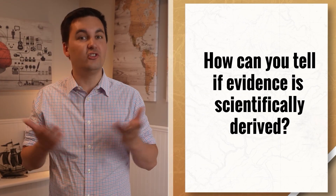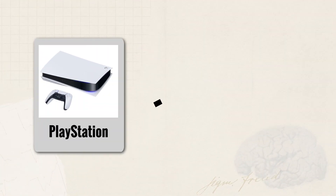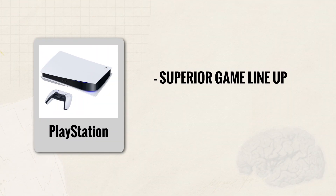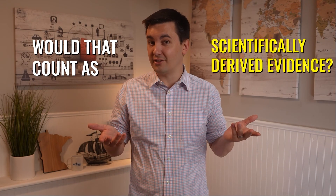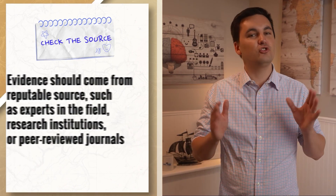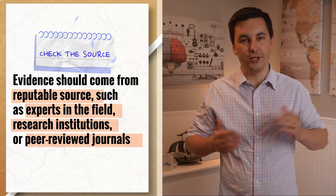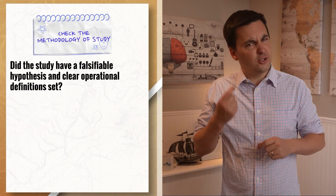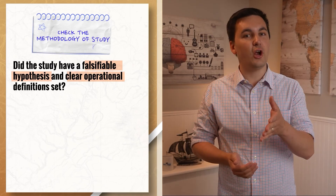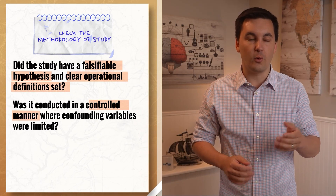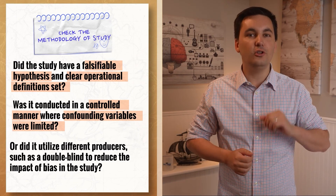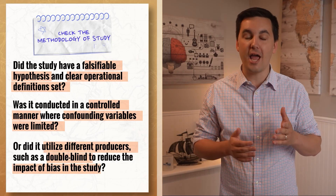How can you tell if evidence is scientifically derived? For instance, if I claimed PlayStation was better than Xbox and supported it with Sony's clearly superior game lineup and console sales, that would not count as scientifically derived evidence. To evaluate evidence, first check the source — it should come from reputable sources such as experts in the field, research institutions, or peer-reviewed journals. Next, check the methodology: Did the study have a falsifiable hypothesis and clear operational definitions? Was it conducted in a controlled manner where confounding variables were limited? Did it use procedures such as a double-blind to reduce the impact of bias?